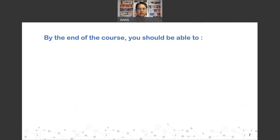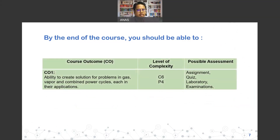Before we go into details of the course, we should understand the learning objectives. CO1 is the ability to create solutions for problems in gas, vapor, and combined power cycles in engineering applications. Possible assessments include assignments, labs, and examinations. CO2 is about the ability to create solutions for problems in refrigeration and air conditioning cycles, with similar assessment types.